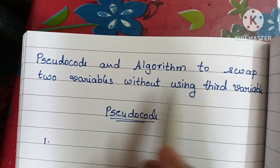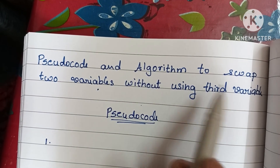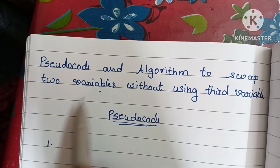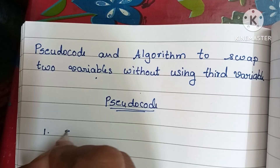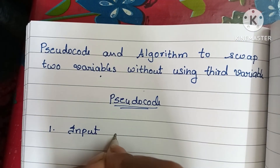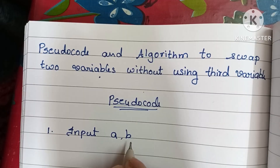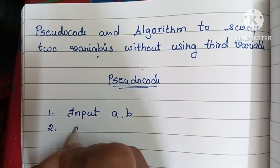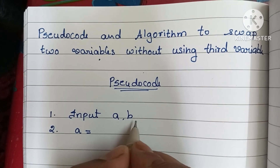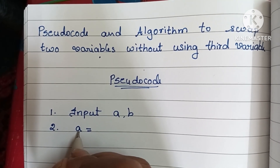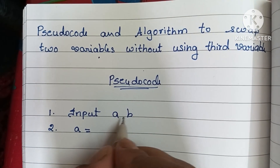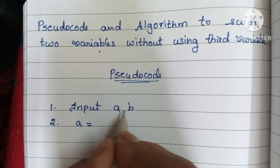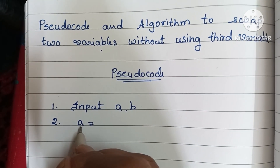To swap two variables without using a third variable, first we have to input two variables — consider variable a and b. Next, we have to calculate the sum of a plus b, and store that result in variable a. So a is assigned the value a plus b.